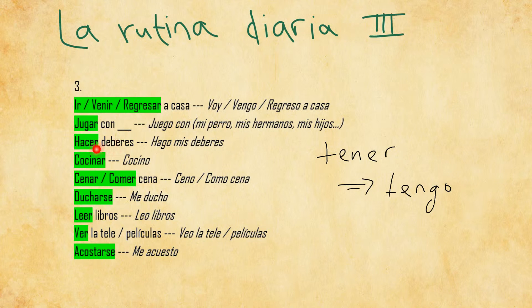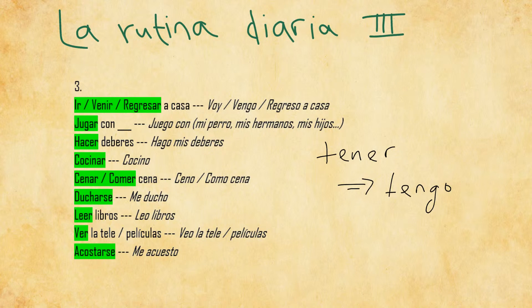You can also cook. The infinitive form is cocinar. If you say that you cook, you say yo cocino or simply cocino. Then after you cook, you usually eat it. To eat dinner can be expressed in two different ways: either using the verb cenar or comer cena. So the first person would be ceno or como cena. You can add a time reference: ceno a las ocho or como cena a las ocho, which means I eat dinner at eight.